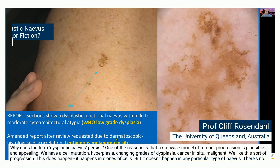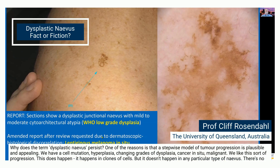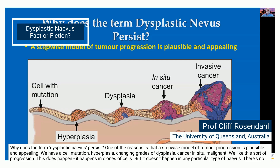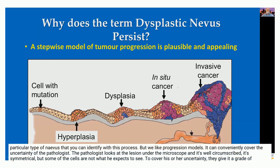Why does the term 'dysplastic nevus' persist? One of the reasons is that the stepwise model of tumor progression is plausible and appealing. We have a cell mutation, hyperplasia, changing grades of dysplasia, cancer in situ, malignant — we like this sort of progression. This does happen in clones of cells, but it doesn't happen in any particular type of nevus. There is no particular type of nevus that you're going to identify with this process.